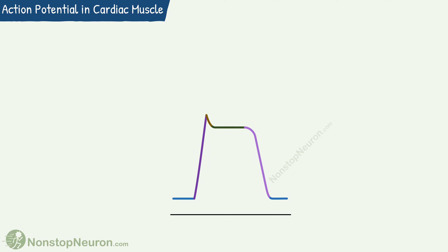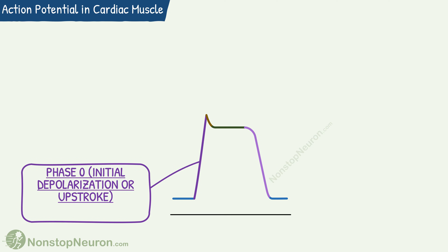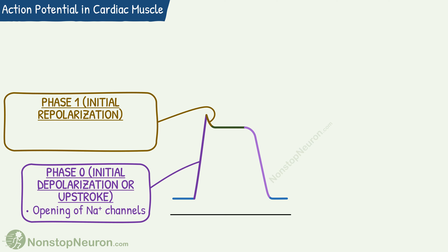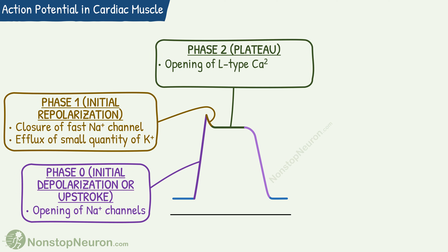The action potential in cardiac muscle looks like this. It has five phases. Phase 0 or upstroke is due to opening of fast sodium channels and rapid influx of sodium. Phase 1 or initial depolarization is due to closure of fast sodium channels and efflux of a small quantity of potassium through open potassium channels. Phase 2 or plateau is due to the opening of slow or L-type calcium channels leading to calcium influx and closure of potassium channels which prevents potassium efflux. The calcium channels stay open for quite some time, so we get a long plateau.